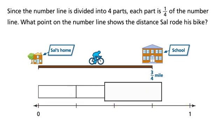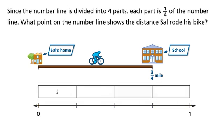Since the number line is divided into four parts, each part is one-fourth of the number line. What point on the number line shows the distance Sal rode his bike?